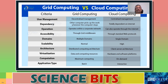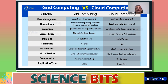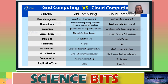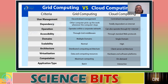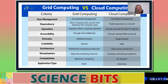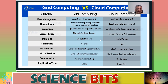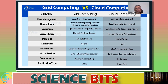Grid computing generally operates within a trusted corporate network, but it can also operate through the internet — for example, putting photographs on Google Drive. These are some of the important differences between grid computing and cloud computing.